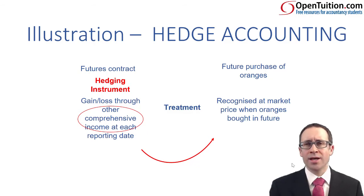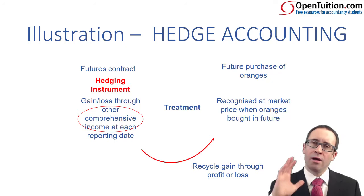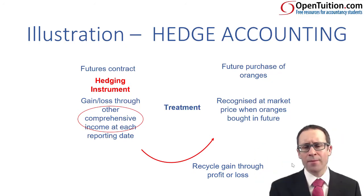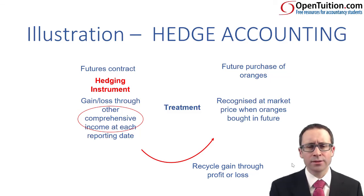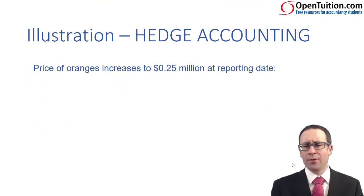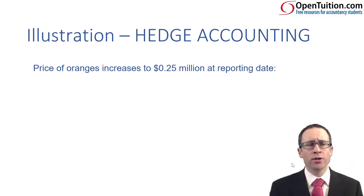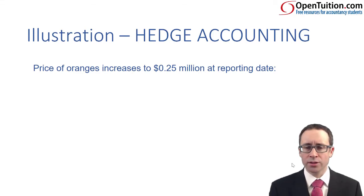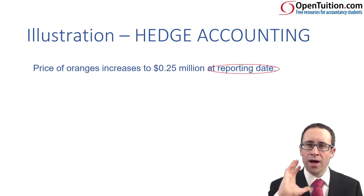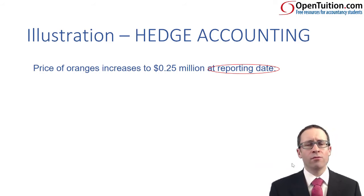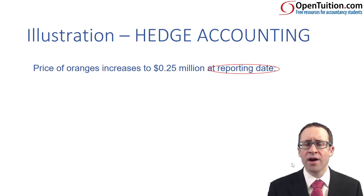What happens is that we take that cumulative gain or loss stored within OCI, and then when we buy the oranges, we recycle that gain through profit or loss. So let's advance our illustration. We had entered into the futures contract at $0.2 million for those 1 million oranges.